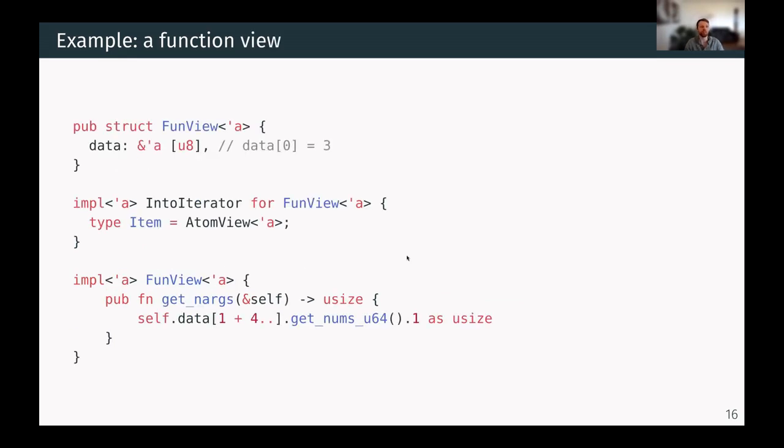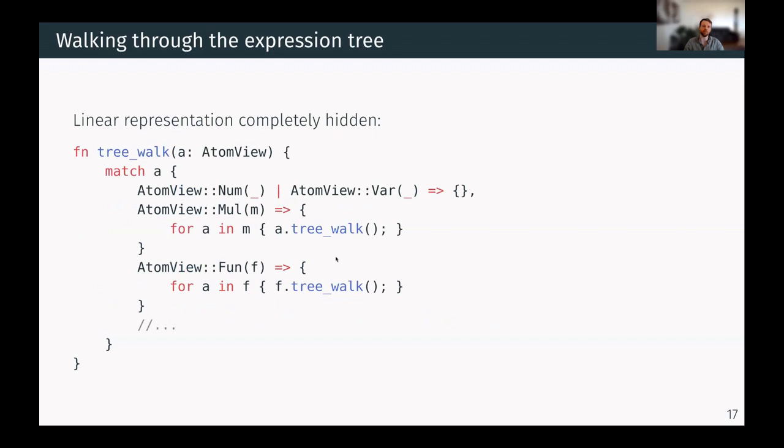Now, the view version of the atom is simply the slice of u8. And again, the first component needs to be a 3. Now, on this, convenient traits are implemented, for example, into iterator. And convenient functions like get nArgs is there as well.